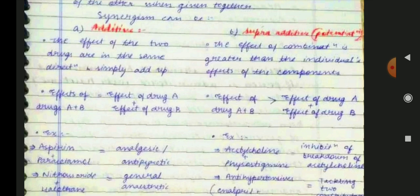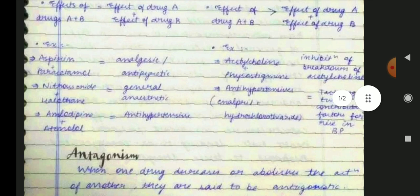For super additive synergism examples: acetylcholine and physostigmine — physostigmine inhibits the breakdown of acetylcholine, so the combined effect is greater than individual effects. Anti-hypertensive drugs such as enalapril and hydrochlorothiazide tackle two different contributory factors for the rise in blood pressure, making their combined effect super additive.